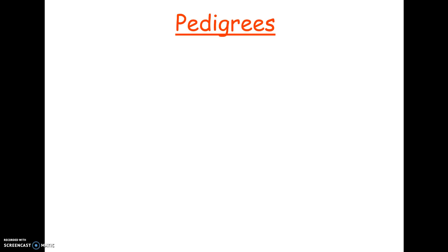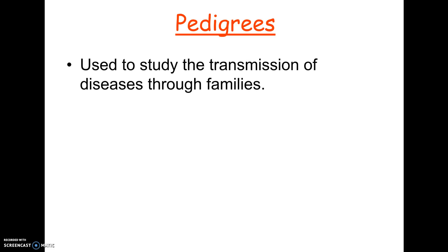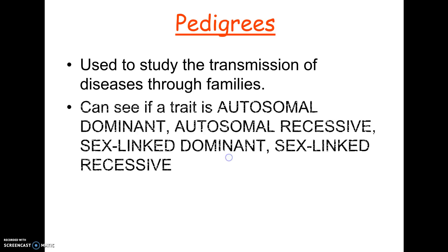Alright, so something that you may be asked to do on the AP exam, and you will definitely be asked to do on my test, will be to work with pedigrees. A pedigree is nothing more than a big family tree that shows how a particular genetic disorder moves through a family line, and it will always show basically a single disorder passed through the family.